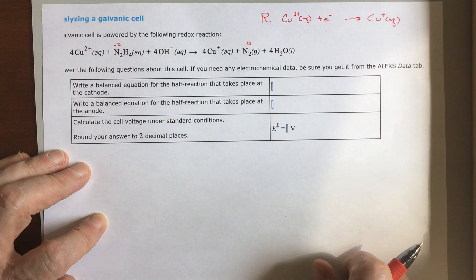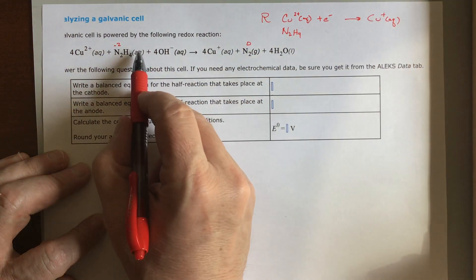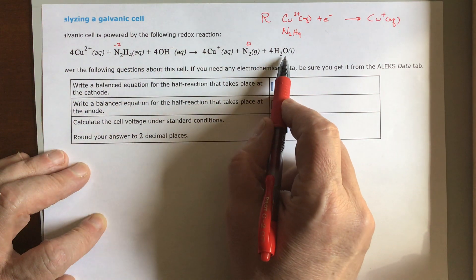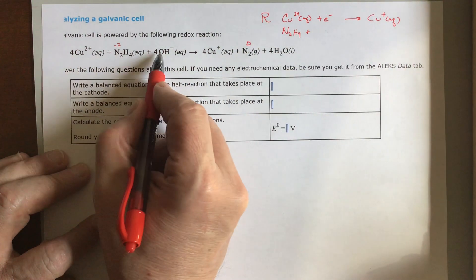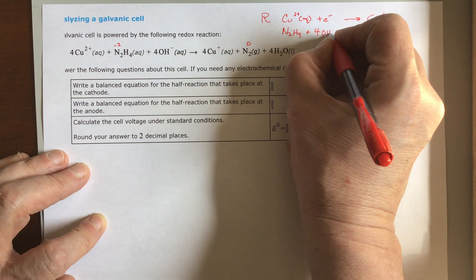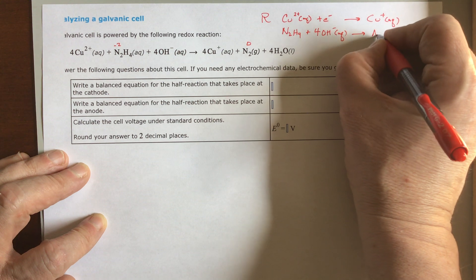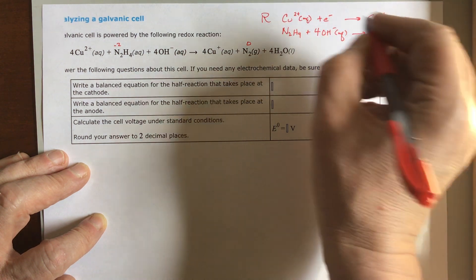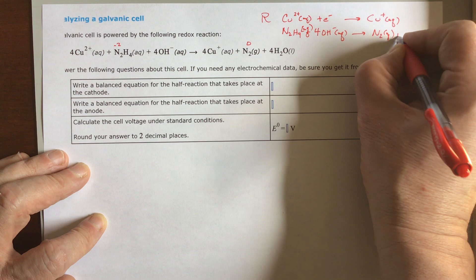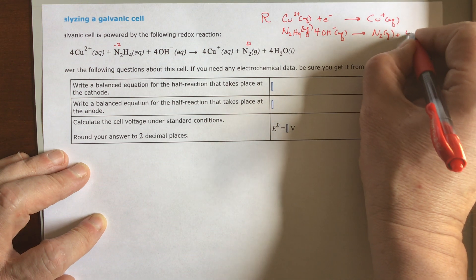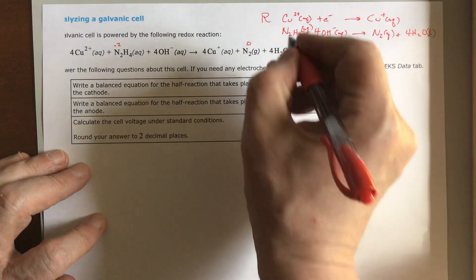The next part would be the hydrazine. So we're going to have N2H4 aqueous, and the H is going to turn into water. I'm going to need the OH because it's the rest of the water, so 4OH aqueous yields N2 gas plus 4H2O liquid. That's the oxidation.